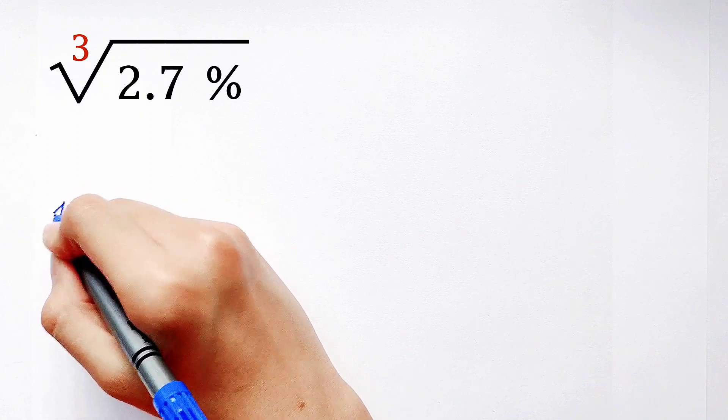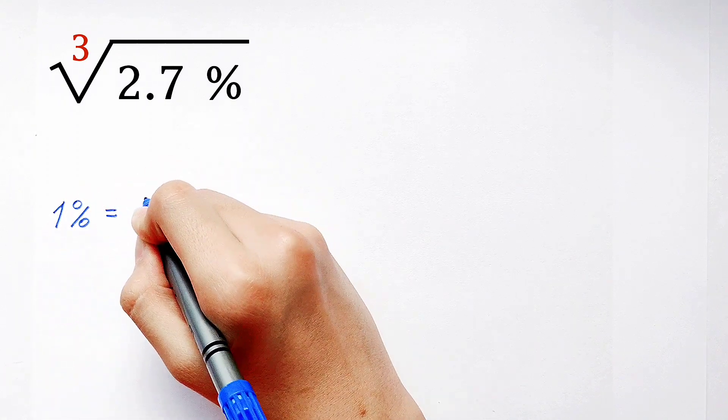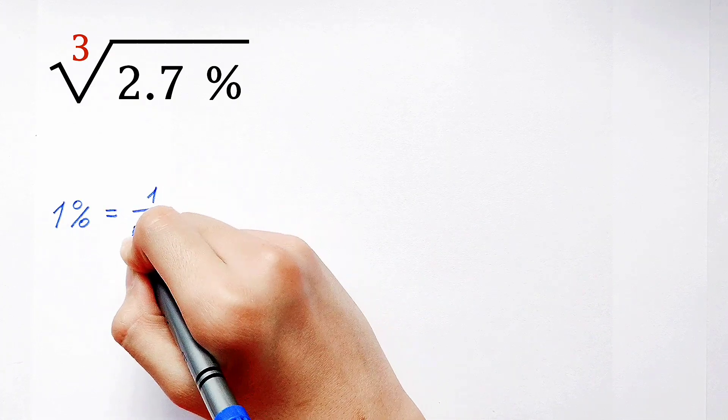Calculate the value of the cube root of 2.7 percent. We know that 1 percent is 1 over 100.